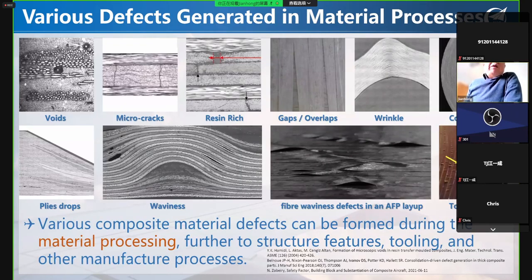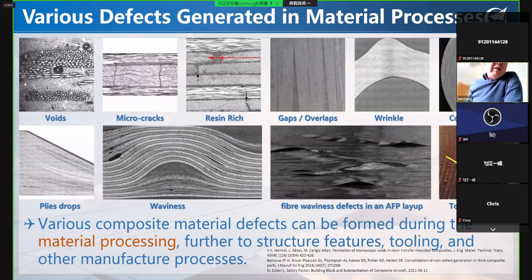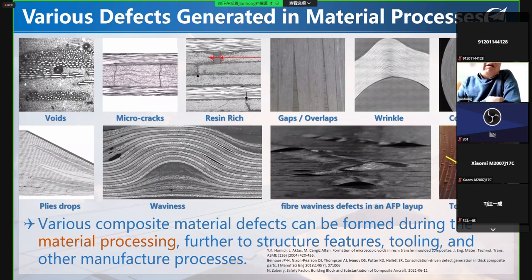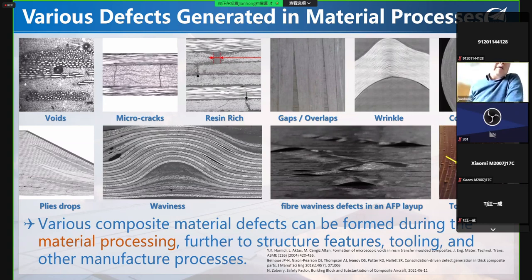One of the most common defects in composites is void or porosity. Researchers demonstrate that when the percentage of voids in the laminates increases, the strength can be reduced significantly. From a quality control point of view, we must control the volume of voids or porosity in the laminate, but that is beyond what failure criteria can handle — we must deal with manufacturing processing. In material processing we have void, microcrack, rich resin, gap overlap, wrinkle, corner defect, ply drop, waviness, and even fiber waviness defects on laminated layers — all composite material defects are directly linked to material processing.